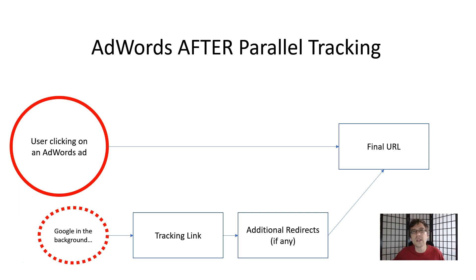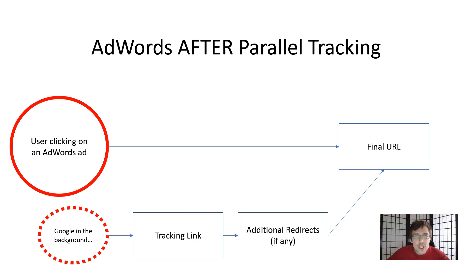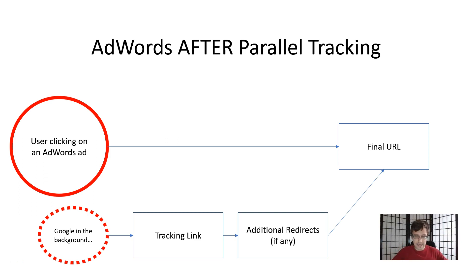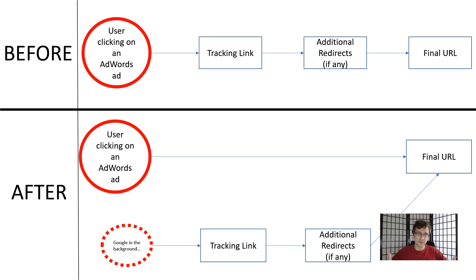So you may ask: how does my ad get tracked? What's the point of the tracking template if users only click the final URL? Well, Google will now click on the tracking template — not the client. At the exact same time the client clicks on the final URL, Google, behind the scenes, will also click on the tracking link, mimicking the click with the same IP and location of that client. So Google will see all the redirects rather than the client, making the client experience much better.